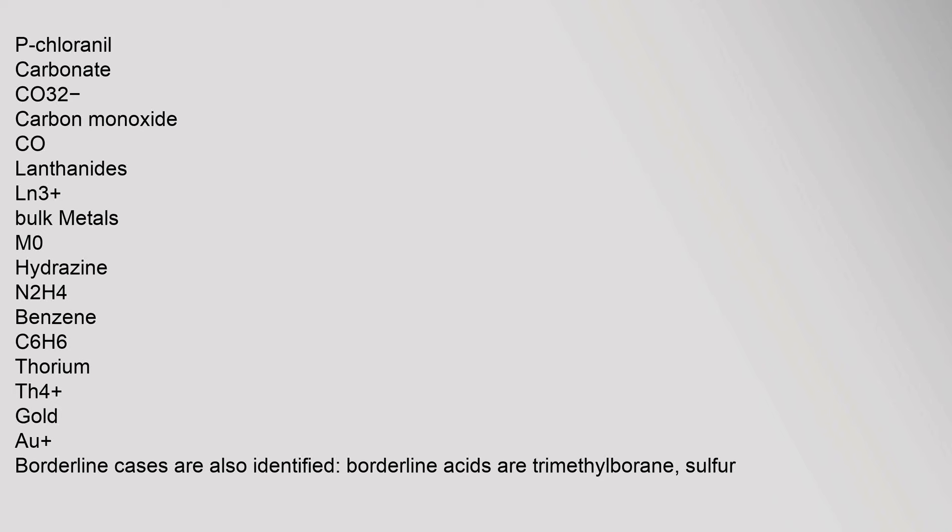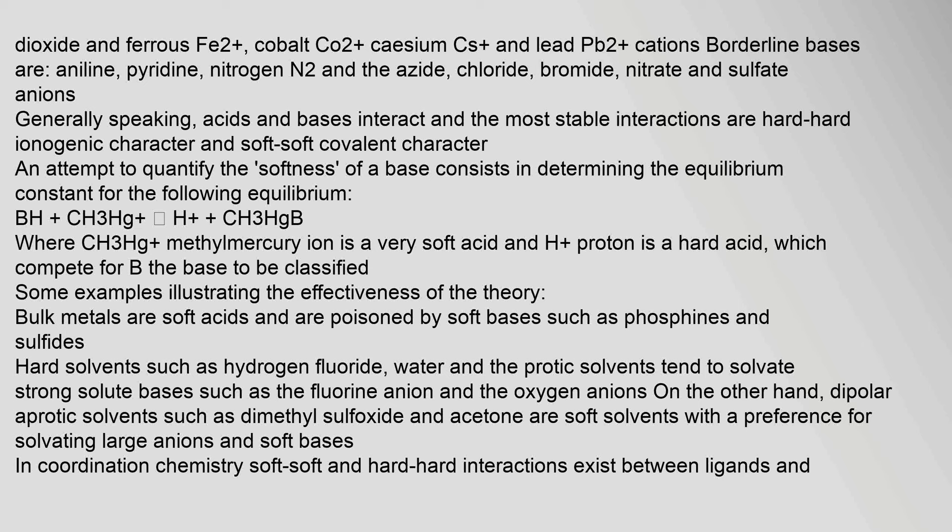Borderline cases are also identified. Borderline acids include trimethylborane, sulfur dioxide, and ferrous Fe²⁺, cobalt Co²⁺, caesium Cs⁺, and lead Pb²⁺ cations. Borderline bases include aniline, pyridine, nitrogen N₂, and the azide, chloride, bromide, nitrate, and sulfate ions.